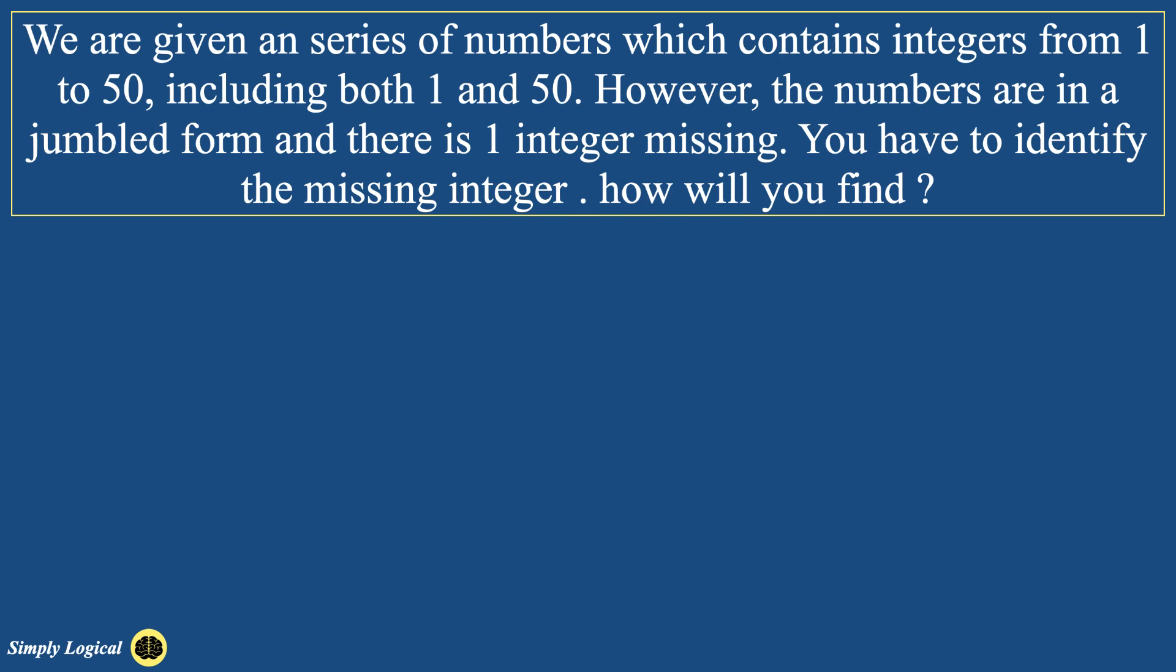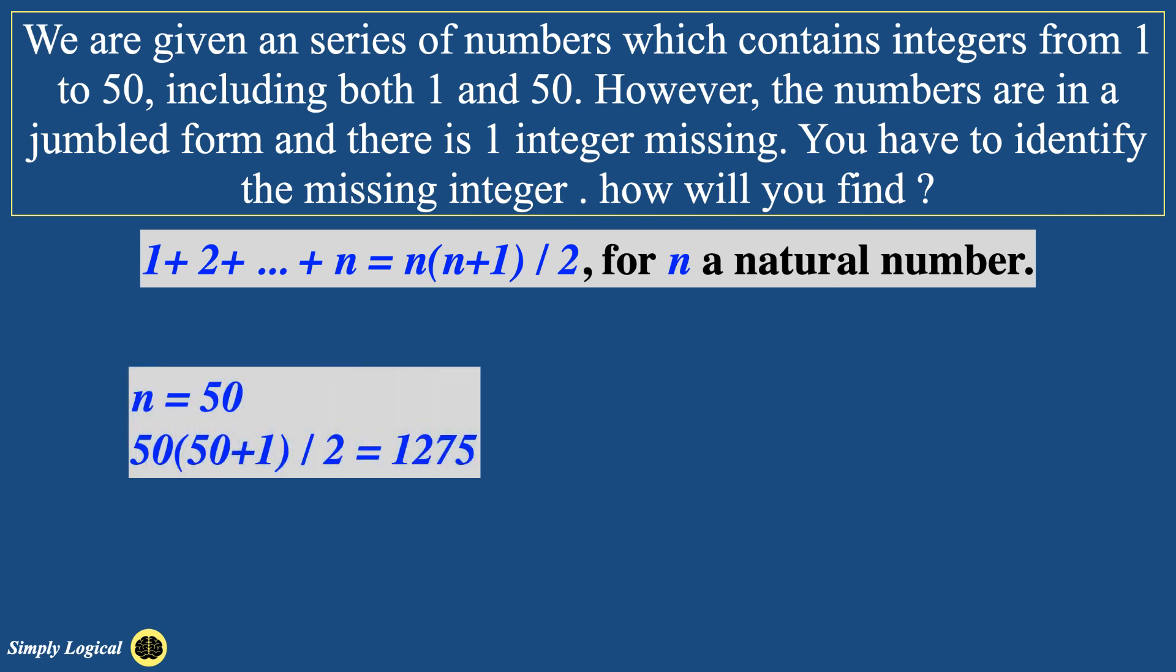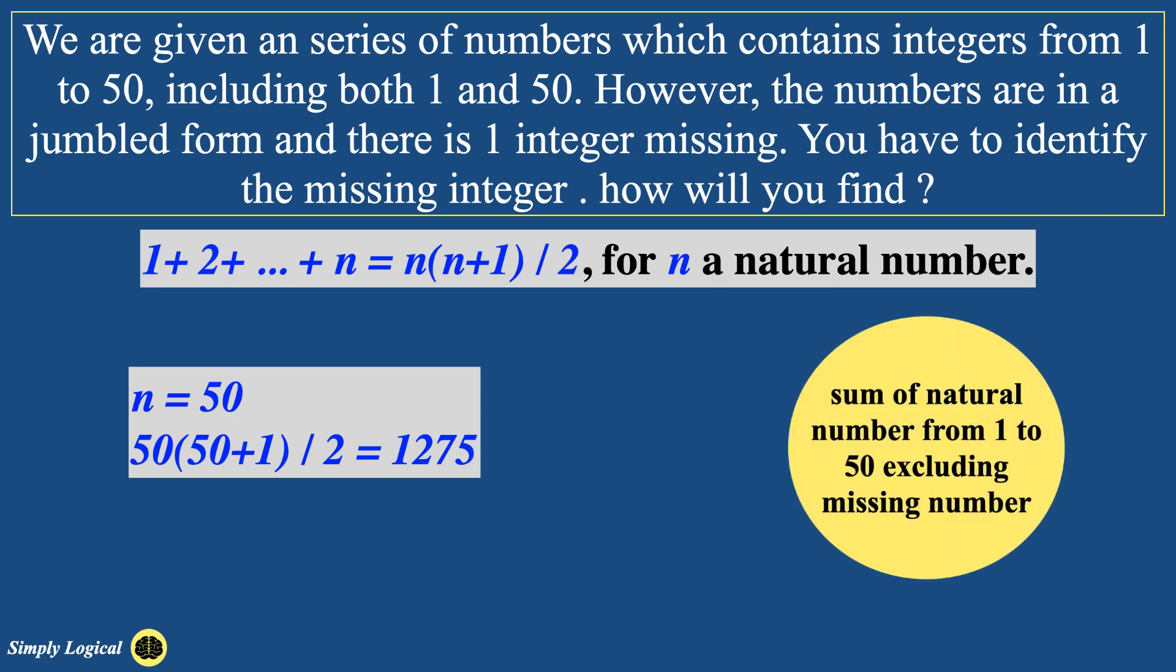Let me explain the solution. We know that the sum of all the numbers from 1 to n can be calculated by using the formula n into n plus 1 divided by 2, where n is the last number in the series. In this case n is 50. So therefore sum of all the numbers from 1 to 50 is 50 into 51 divided by 2. After solving, sum of all numbers from 1 to 50 is 1275.